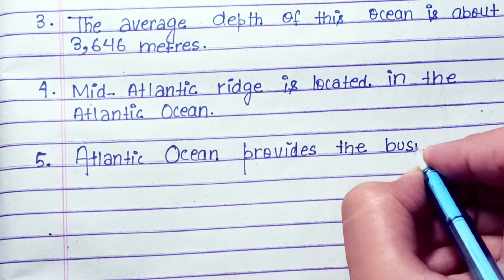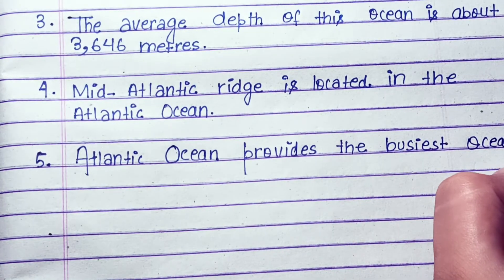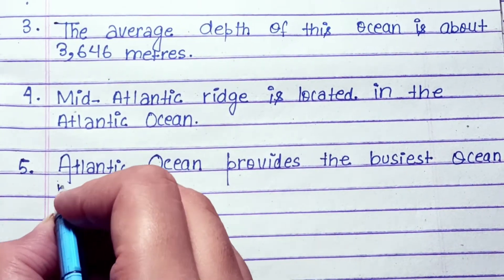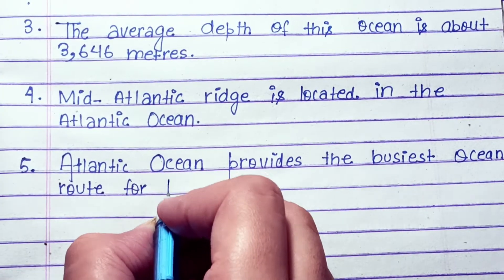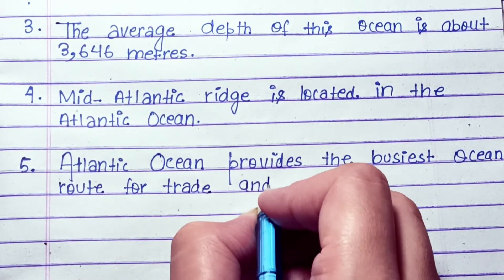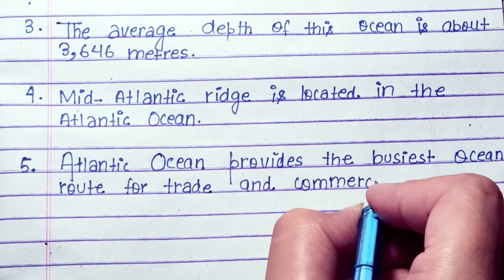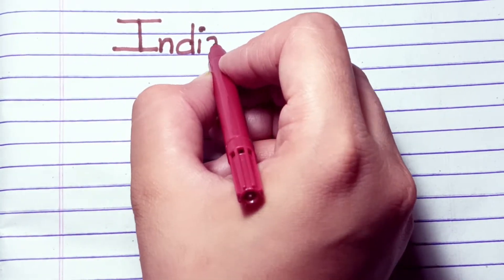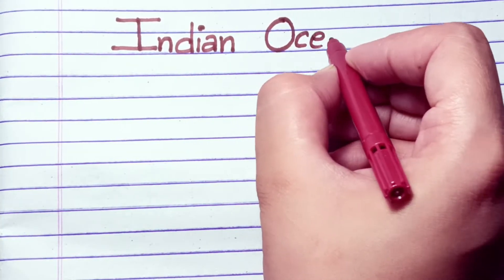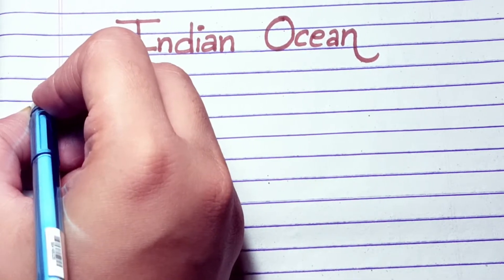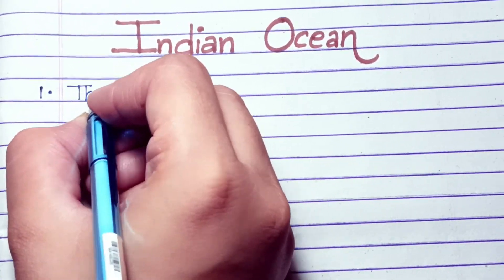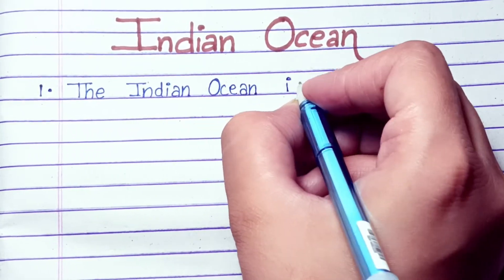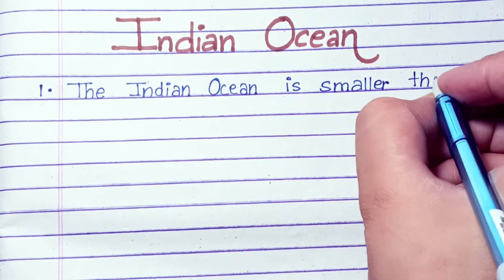The Mid-Atlantic Ridge is located in the Atlantic Ocean. The Atlantic Ocean provides the busiest ocean route for trade and commerce.